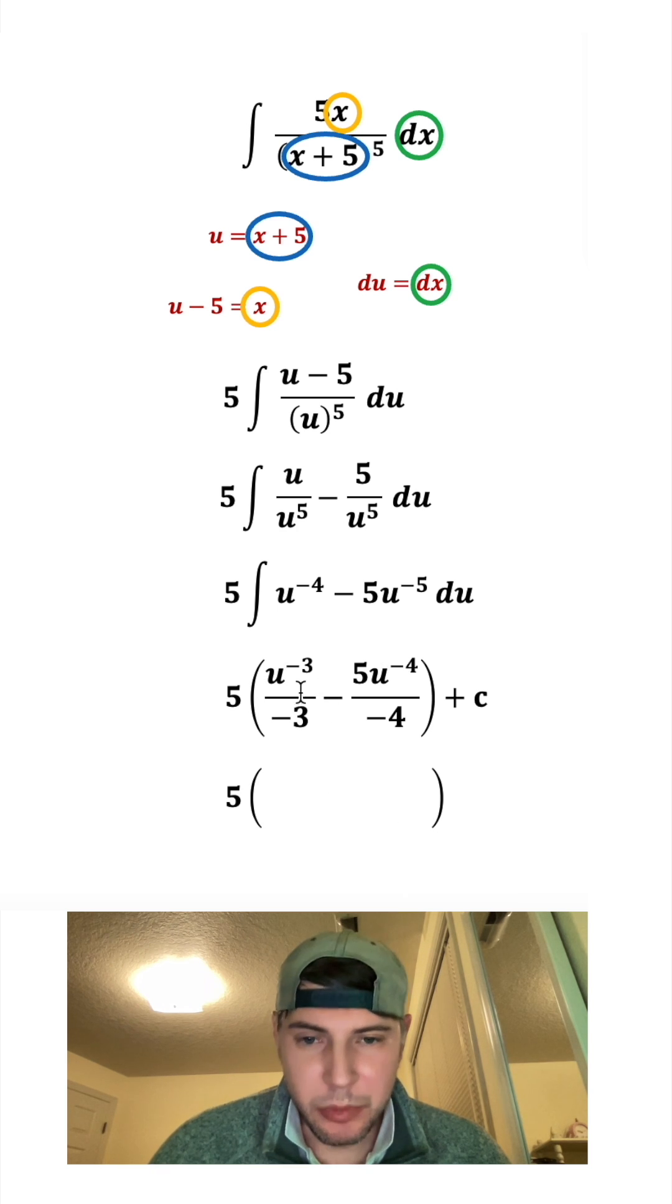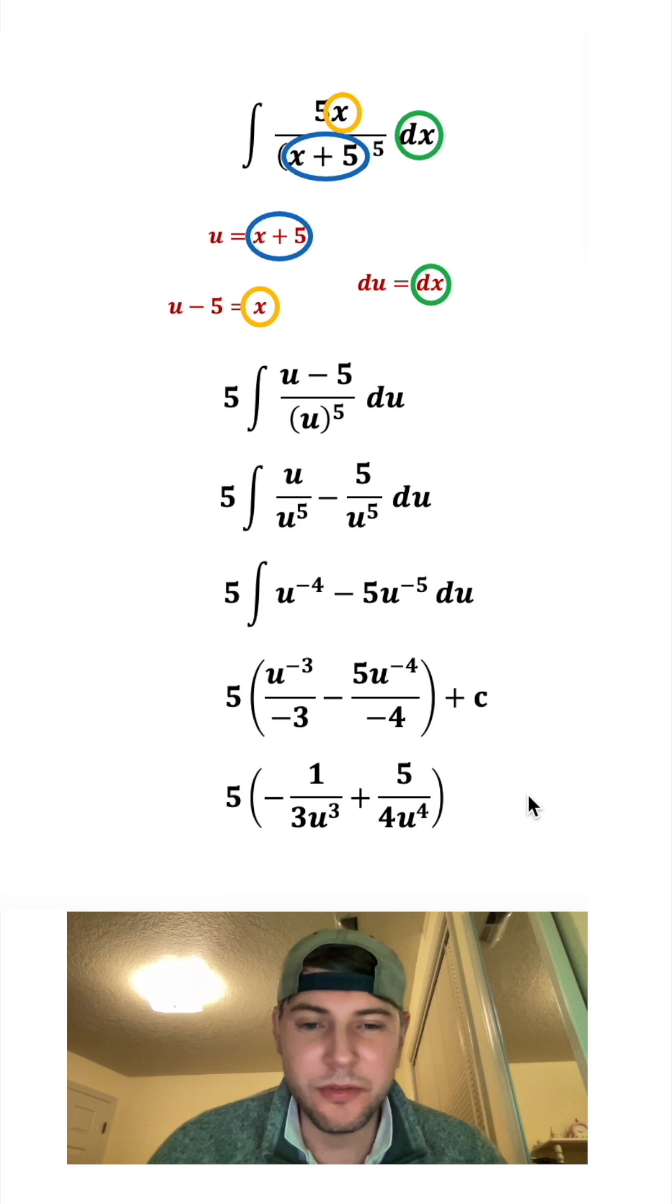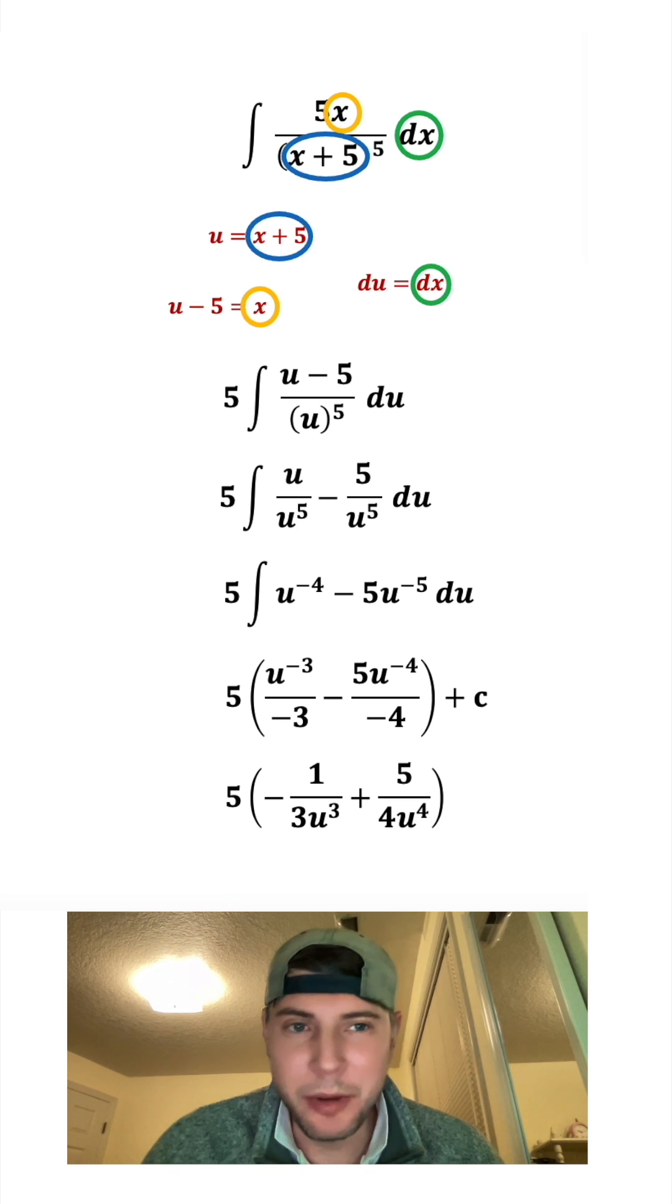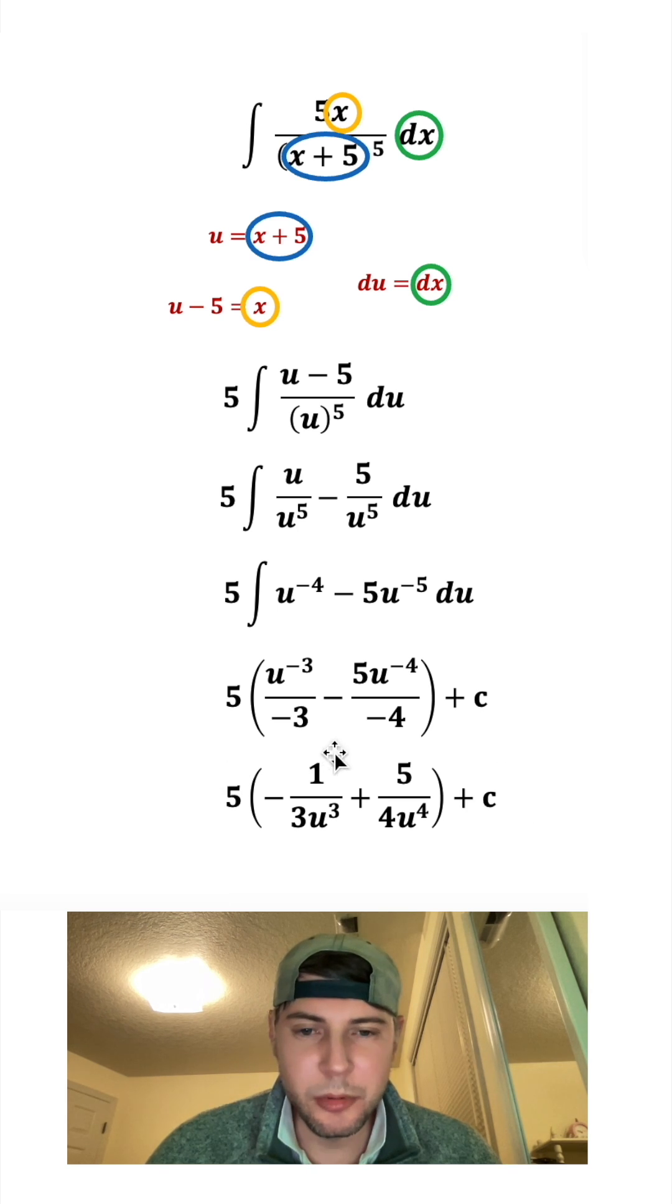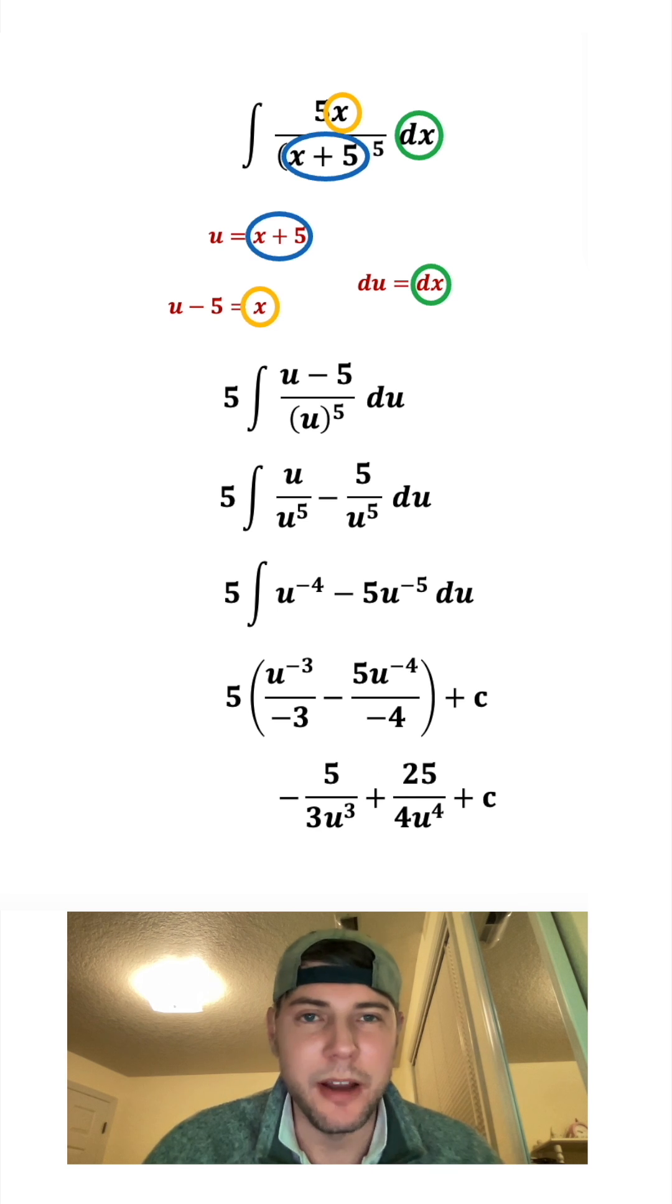And now we can clean things up a little bit. We can rewrite this as negative 1 over 3u cubed. And we can rewrite this as plus 5 over 4u to the 4th, and we can't forget the plus c. Next, we can distribute the 5 to both of these, which would give us a 5 and a 25. And now let's switch the order of these.